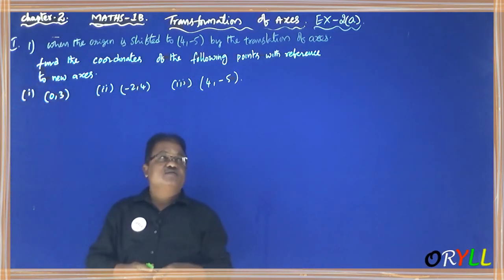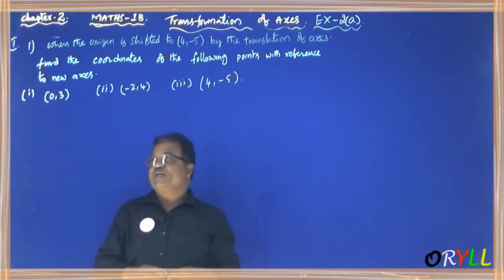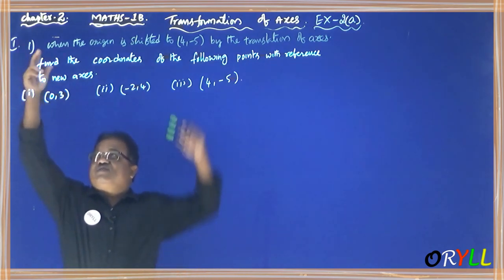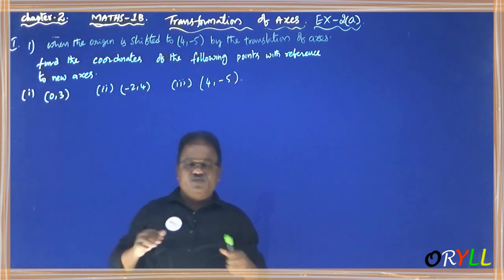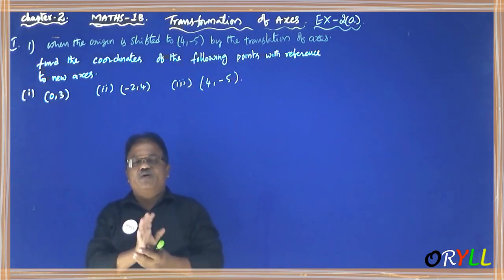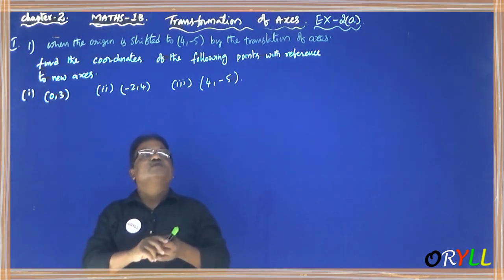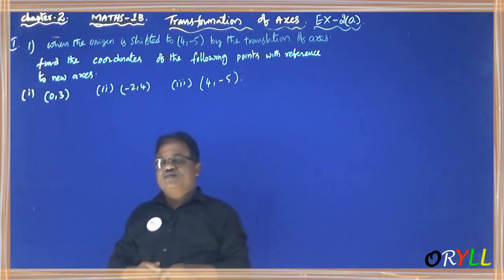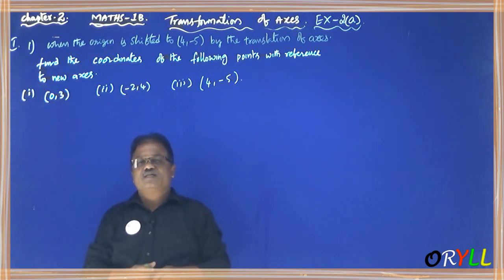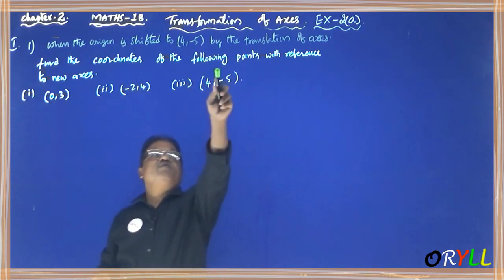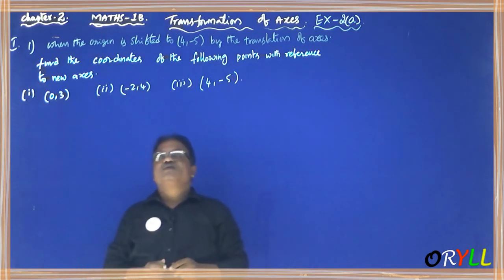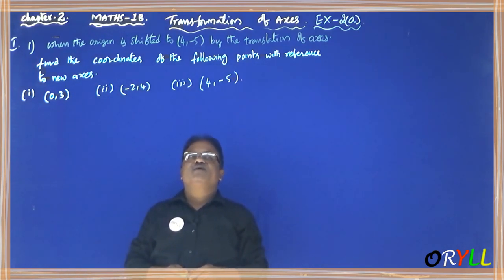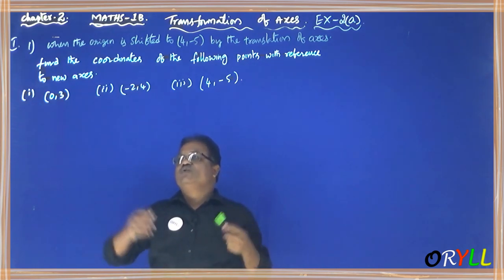An exercise on transformation of axes topic. First section, first problem: when the origin is shifted to (4, -5), that is h comma k, by the translation of axis — that is the shifted origin case — find the coordinates of the following points with reference to the new axis.